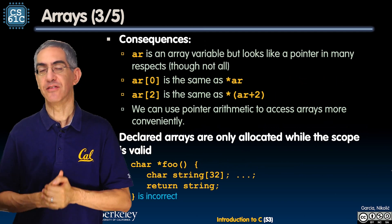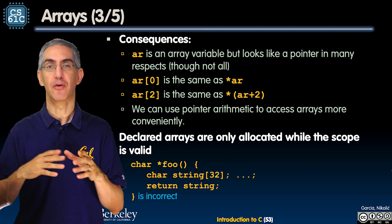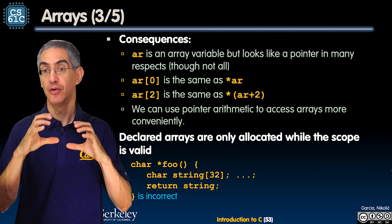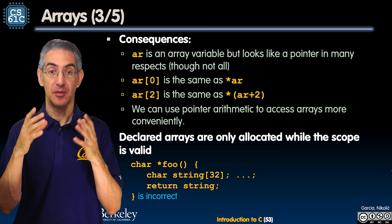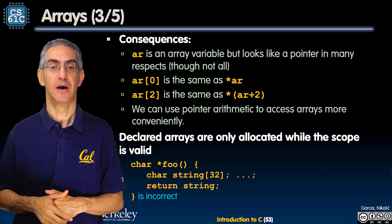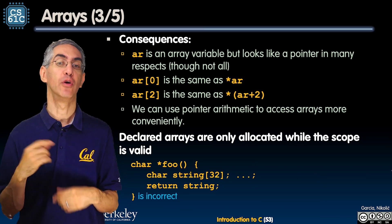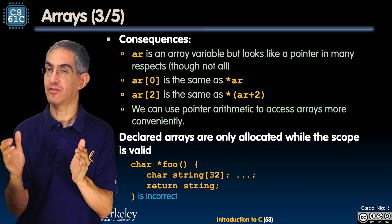What that means is if you have AR and it's an array variable but it looks like a pointer in most respects, you can say AR[0]. You can also say *AR. So remember AR was declared as an array - you can still say *AR. You can also say AR[0]. You can say AR[2]. You can also say *(AR + 2).